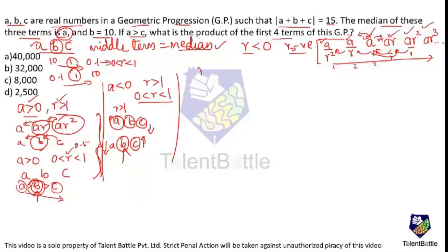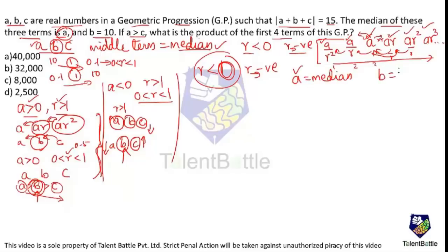Whenever r is negative, the median is not the middle term. In this problem, A is given as the median and B = 10. So I write the three terms of the GP with B = 10: they are 10/r, 10, and 10r. The common ratio is r, and r is negative.